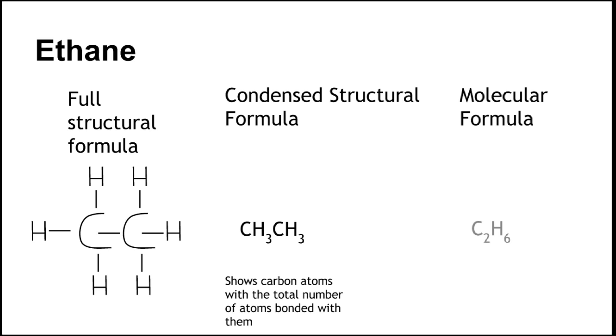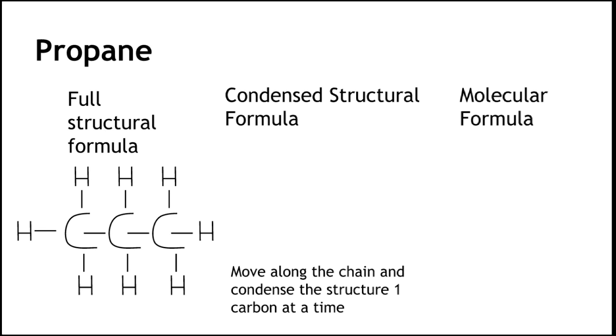We lose the covalent bonds in the condensed structural formulae, there's no need. Each carbon atom in the ethane molecule has got three hydrogen atoms attached to it. In the condensed structural formula, we only want to show what's attached to each carbon atom.